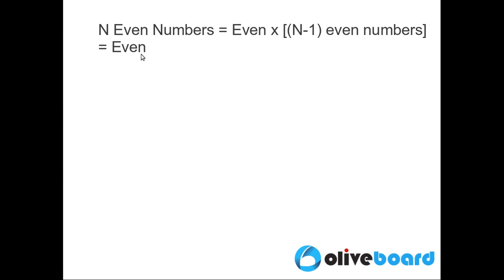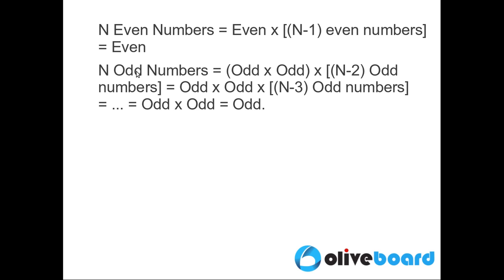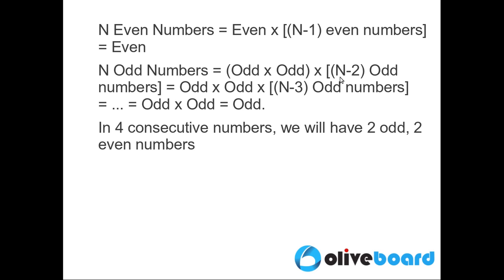An even number multiplied by any number is even, so the resultant is an even number. If we multiply n odd numbers, it's the equivalent of multiplying two odd numbers into n minus 2 odd numbers. The product of the first two odd numbers will be odd, which results in odd into odd into n minus 3 odd numbers, and so on, which results in odd into odd equal to an odd number.